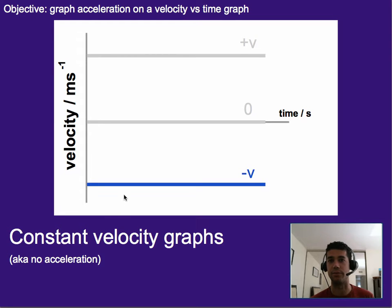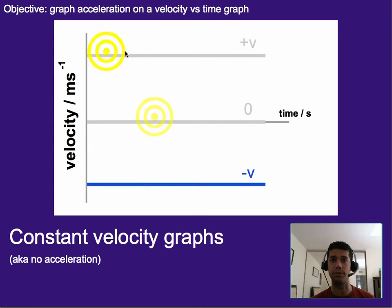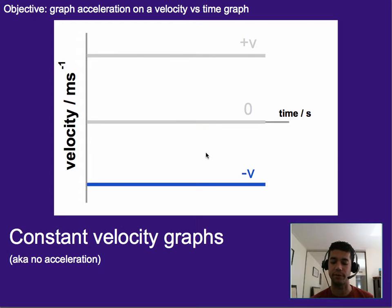The acceleration is zero — it doesn't exist. So what we might expect, then, is if something is accelerating, the line either needs to be going up or it needs to be going down to show that it's accelerating.